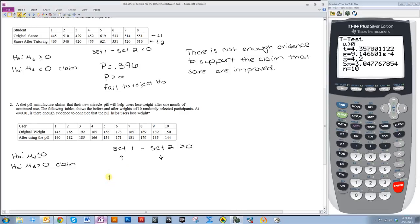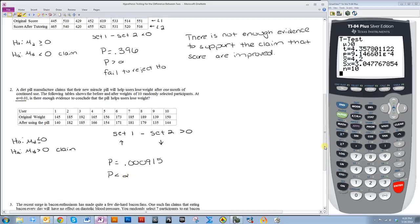So my p-value is written in scientific notation. This means that you have to move the decimal point four units this way. So that means that there are three zeros between the decimal point and the number. So 0.000123915. So p is definitely less than alpha, because alpha was 0.01. So that means I reject H0.